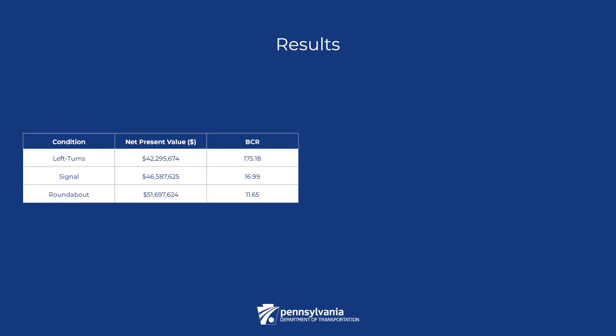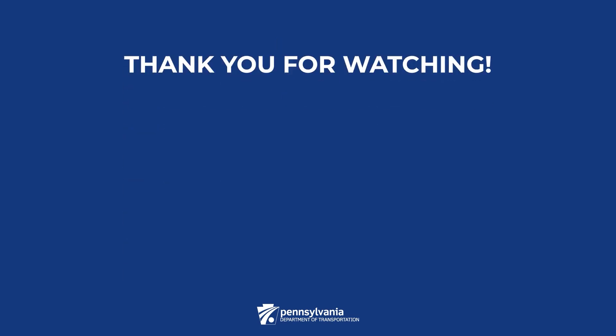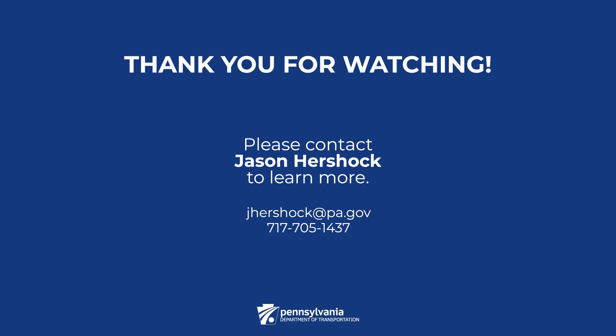The table here shows the net present value and benefit-to-cost ratio of the three future alternatives. BCR is an appropriate measure to achieve the most efficient project. BCRs greater than 1.0 and positive NPVs indicate that improvements are economically justified for all potential alternatives. Alternative 1, or the left-turns alternative, is the most cost-effective alternative. This alternative is what PennDOT selected and implemented at this location, as shown in the image on the right. Thank you for joining us to learn about the analysis of rural offset T-intersections. For questions, contact Jason Hershock, Manager of the Safety Engineering and Risk Management Unit.